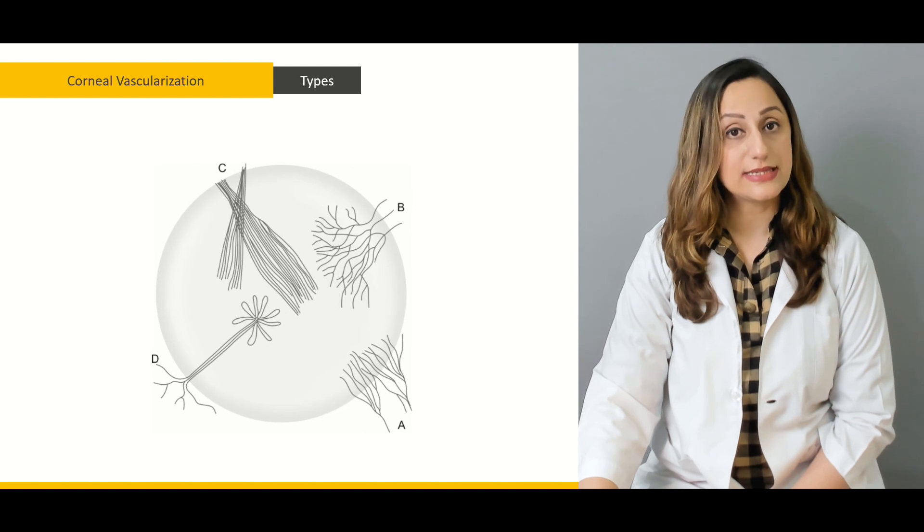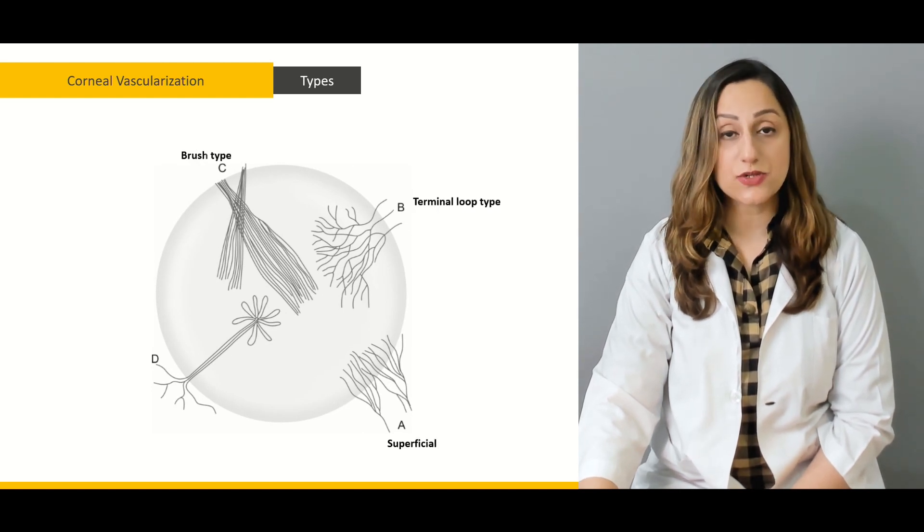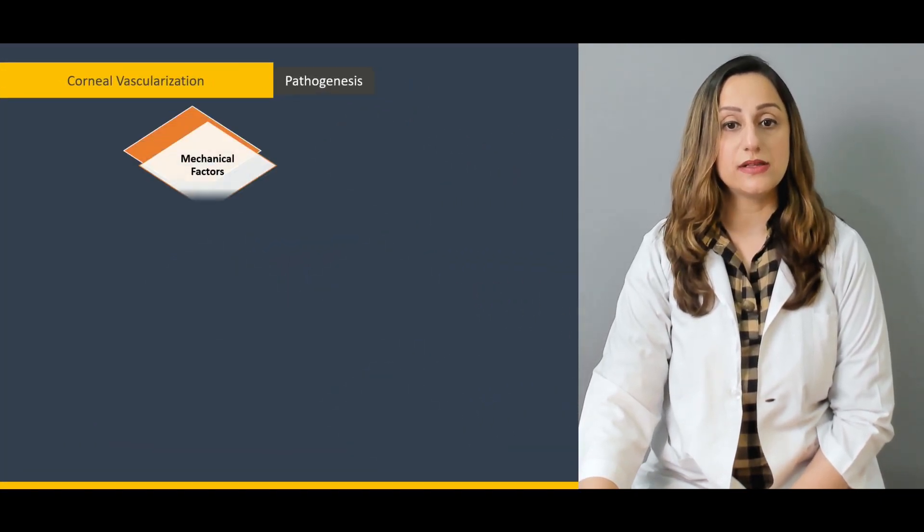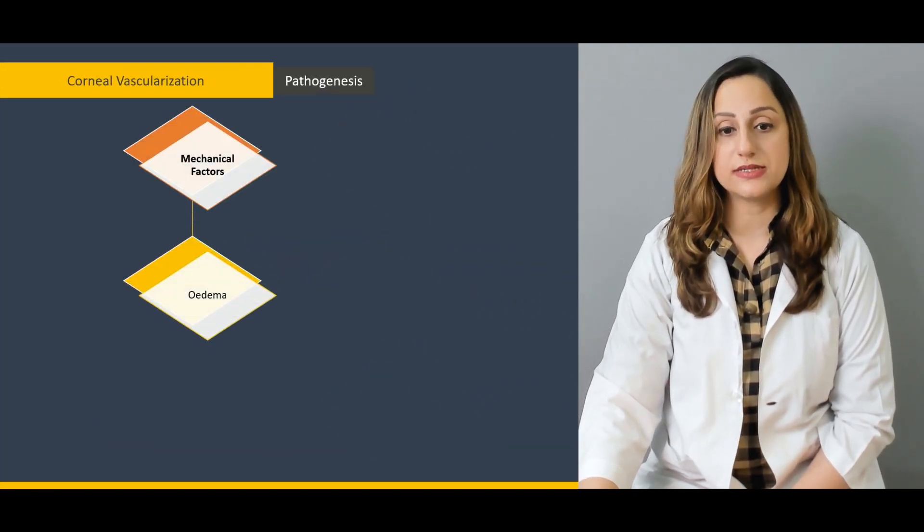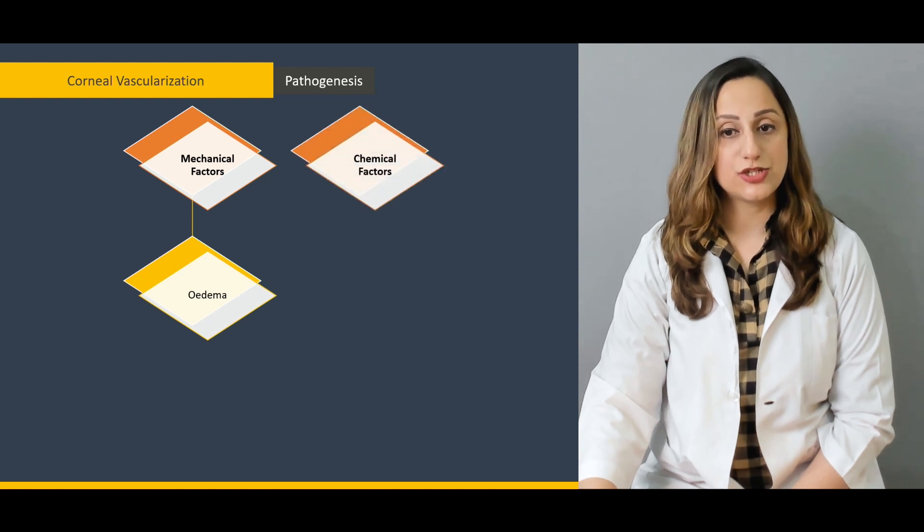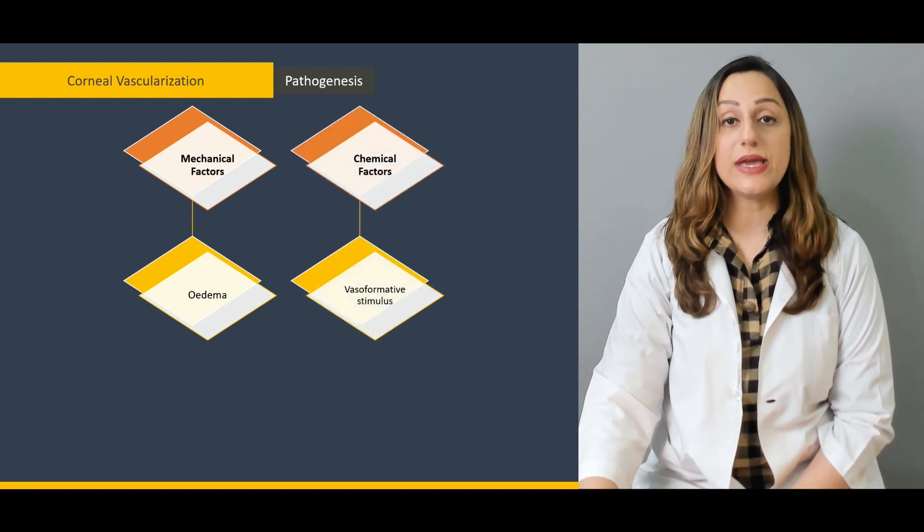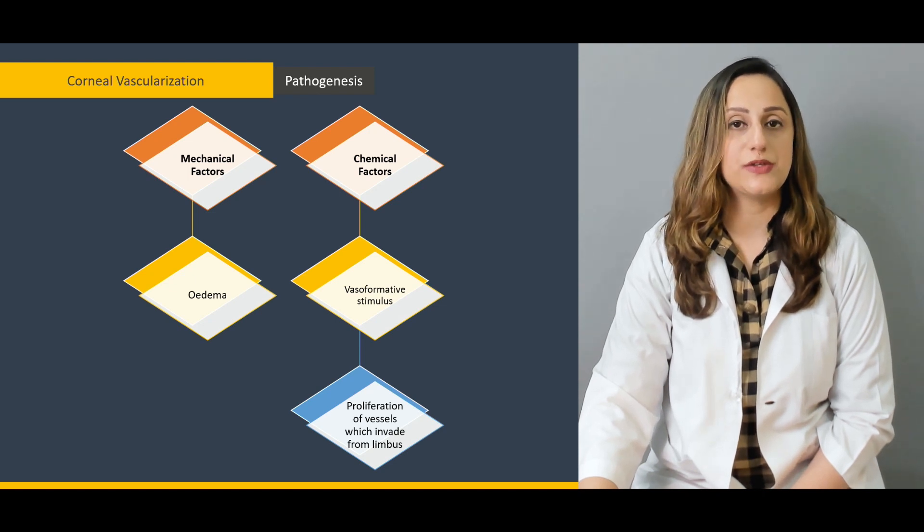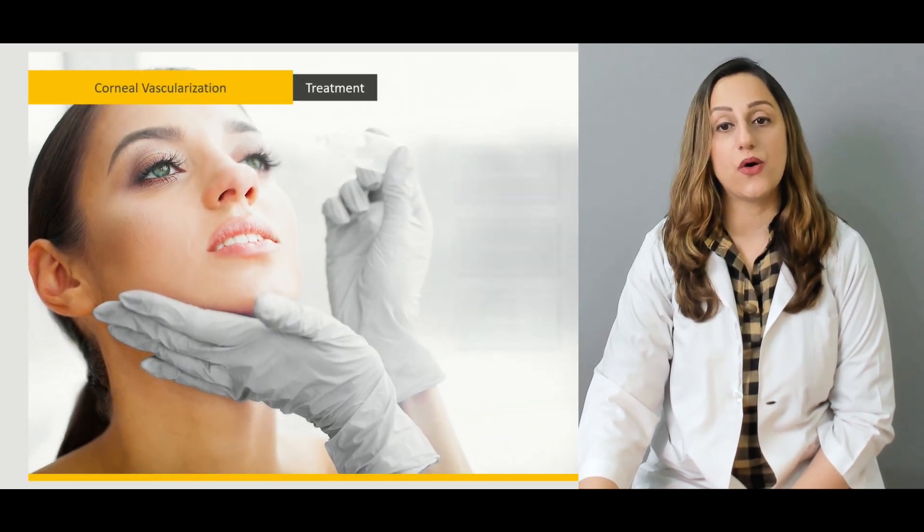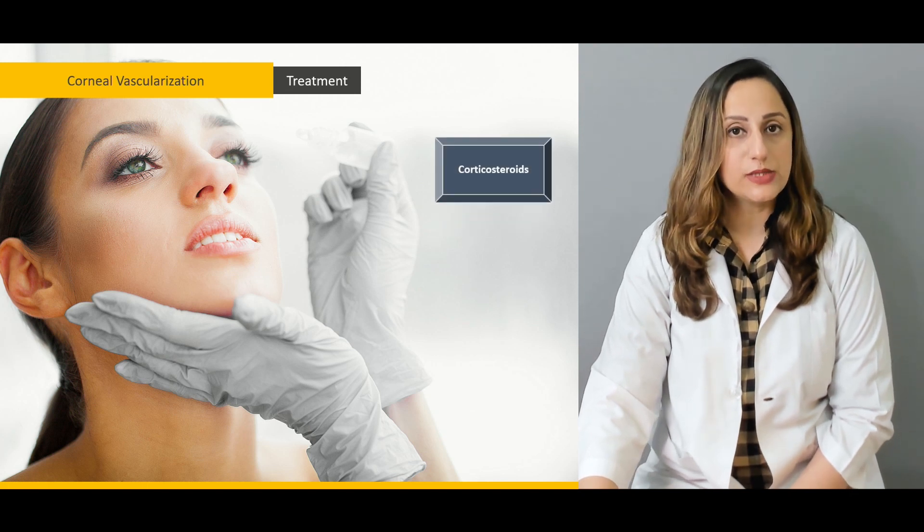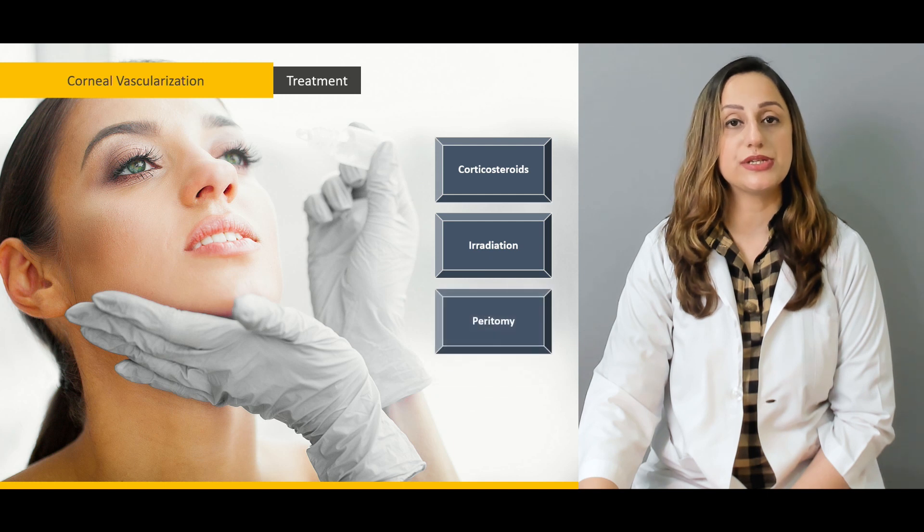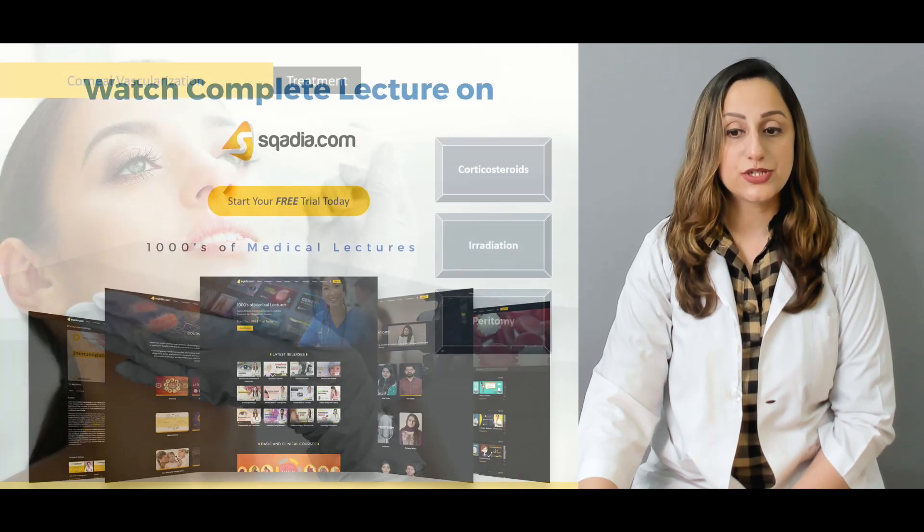For corneal vascularizations, there are four major types that would be discussed, along with the pathogenetic factors leading to edematous conditions as well as vaso-formative stimuli leading to proliferation of vessels which can invade the cornea. The treatment for corneal vascularizations includes the use of corticosteroids, irradiation, and peritomy.